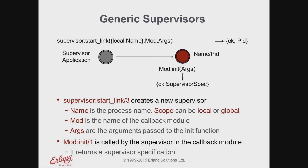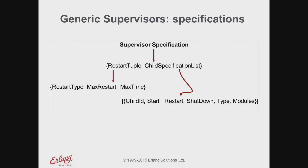The supervisor specification is a tuple containing two elements. The first tells the supervisor how to handle dependencies among children, as well as the maximum number of restarts allowed in the supervision subtree within max_time seconds. The second element is a list of child specifications providing information on how to start and stop the various children. Let's look at these values in more detail, starting with the restart tuple.